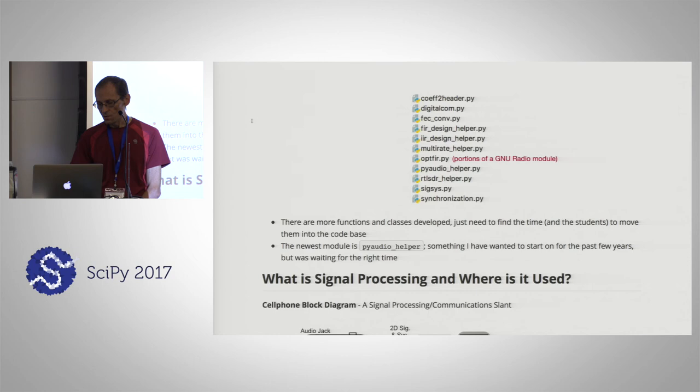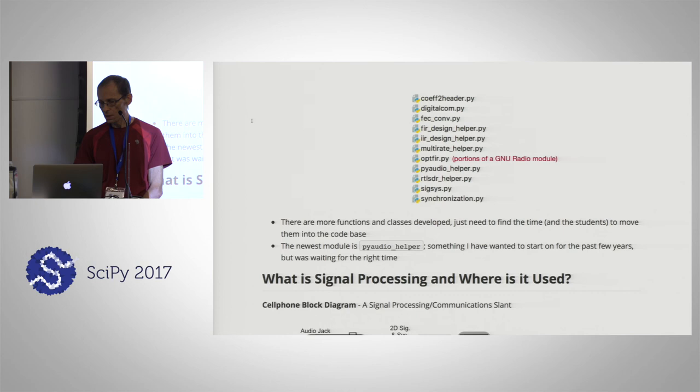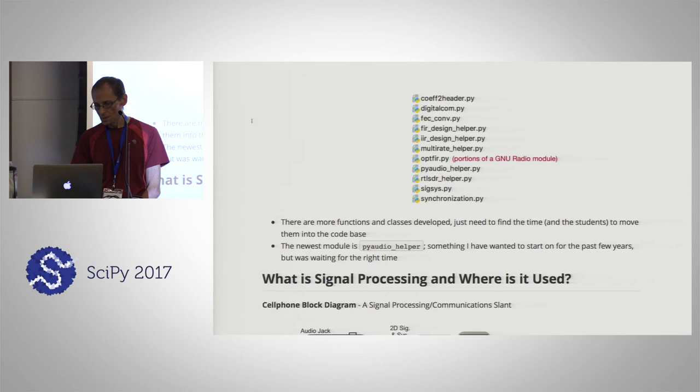Multi-rate helper is to do multi-rate signal processing along with the filters — it's partially there but not fully developed, and we're not going to be using it. OPT FIRPY is something I've taken from the GNU Radio module, which is a software-defined radio toolkit that has Python along with C++. This is a function that should be in scipy.signal but isn't, so I put it in my package to design certain types of filters.